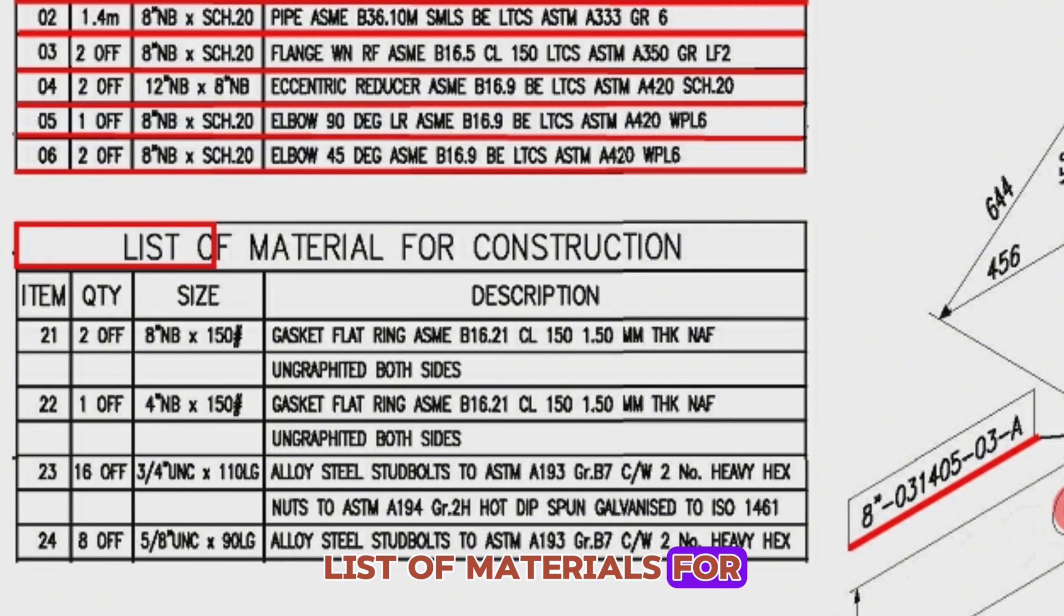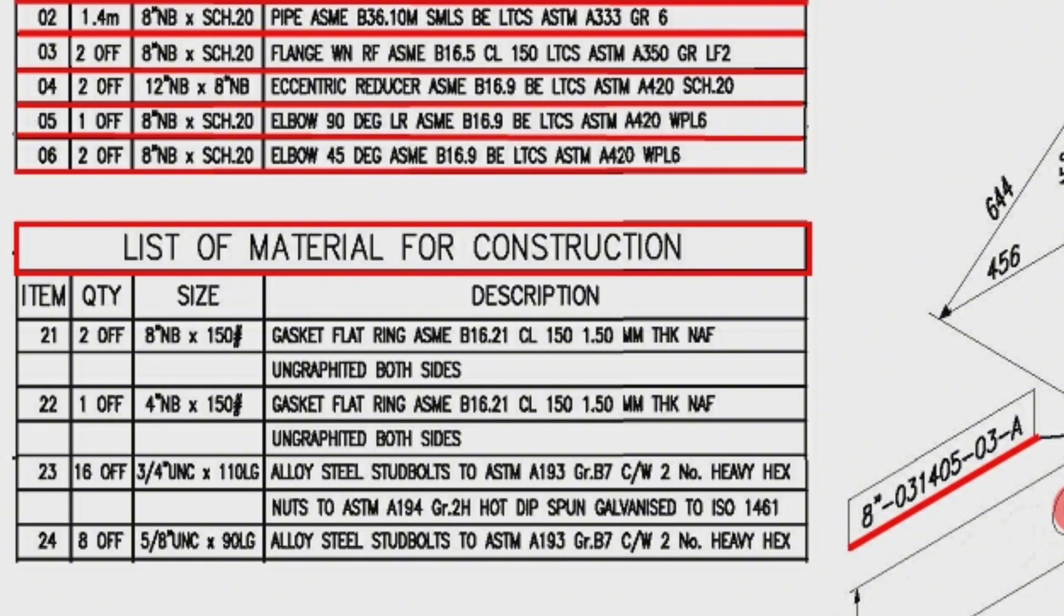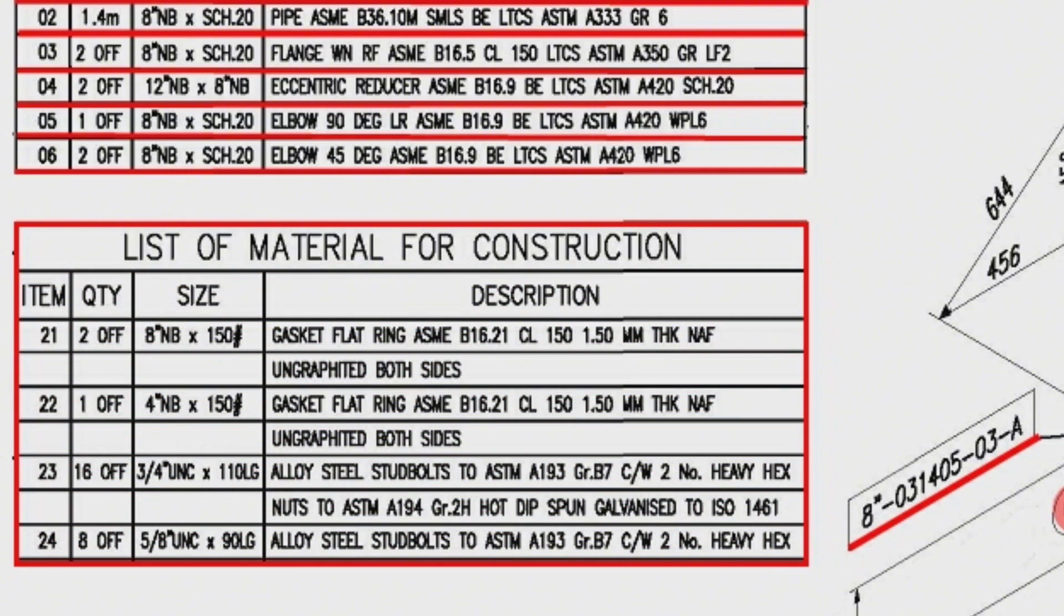The list of materials for construction is shown in this table. These materials are required on installation stages. You can see in this table gaskets, stud bolts, nuts, washers, etc.